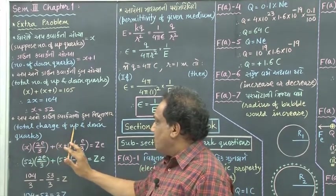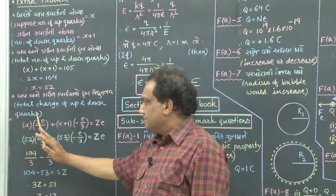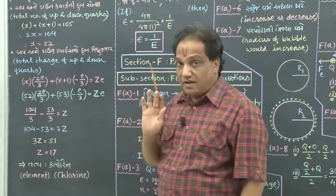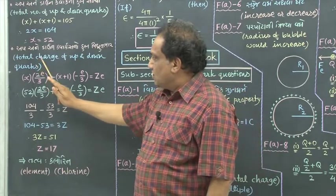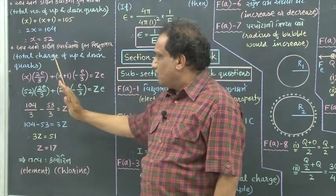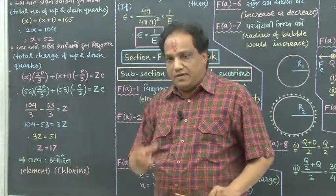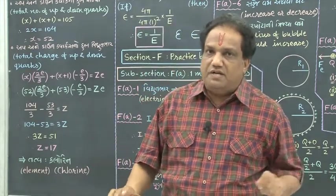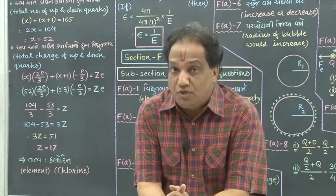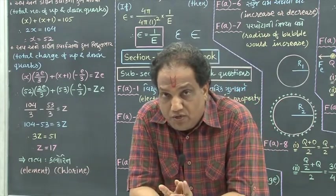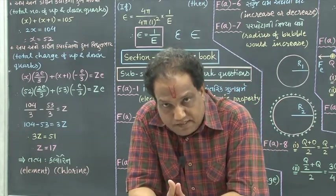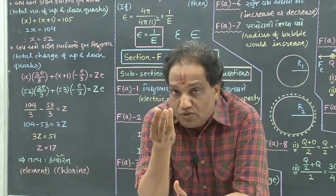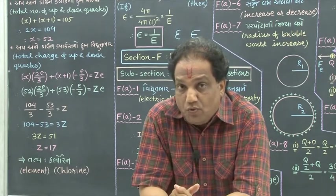Now, total charge of up and down quarks. Try to understand this mathematical step very clearly. Total charge of up and down quarks — inside the atom, which particles have quark composition? Proton and neutron. And then the protons and neutrons reside inside the nucleus.